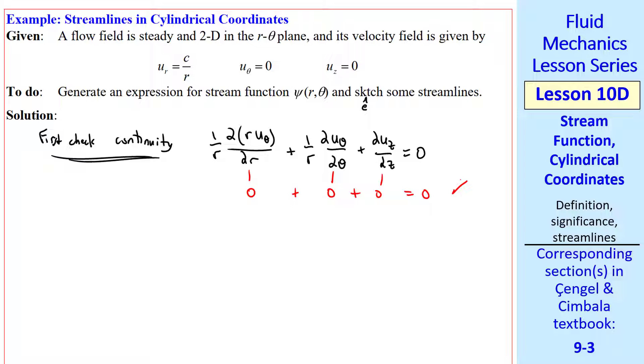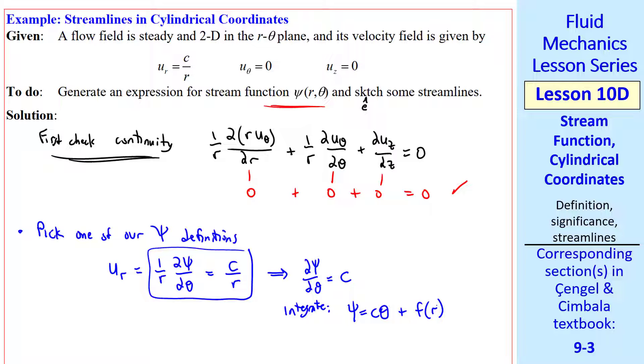To find the stream function, we follow the same procedure that we did previously for Cartesian coordinates. Namely, we pick one of our psi definitions. To start with, I'll pick this one. U_r is 1 over r del psi del theta. And we know that u_r is C over r from the given information. This becomes del psi del theta equals C when we multiply both sides by r. Now we can integrate psi equals C theta plus a function of the other variable, which is r. Since this is a partial integration,